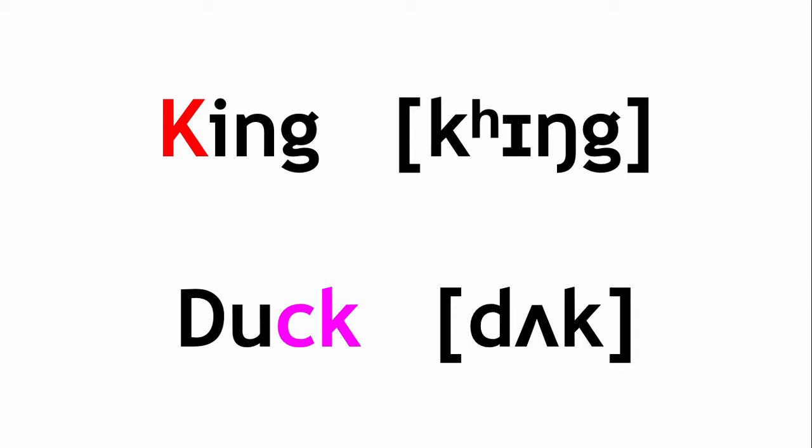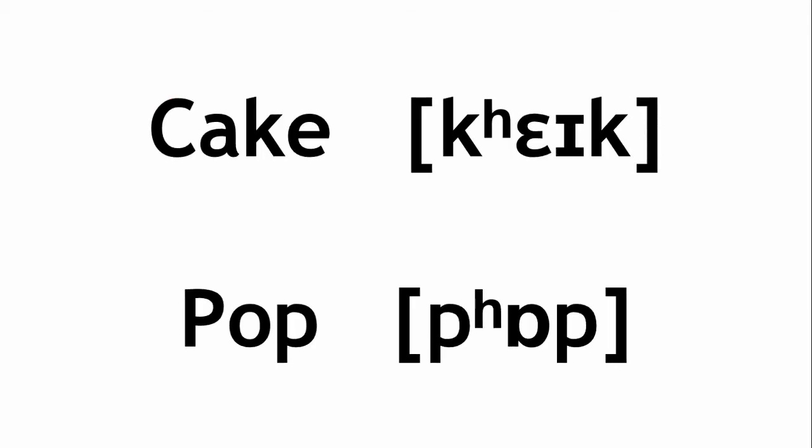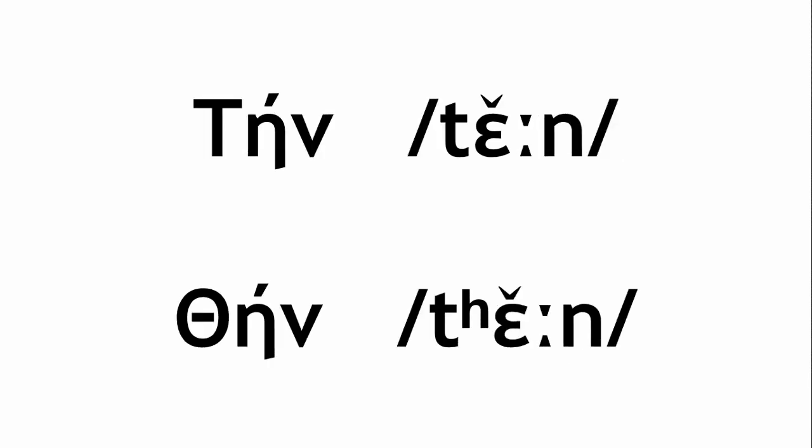This shows aspiration — a little burst of air with the sound. If you hold your hand in front of your mouth and say a word like 'cake' or 'pop', you should be able to feel the difference between the first and last sounds. While this difference is purely phonetic in English, other languages make the phonemic distinction as well, such as Ancient Greek, which has a minimal pair to demonstrate the distinction.